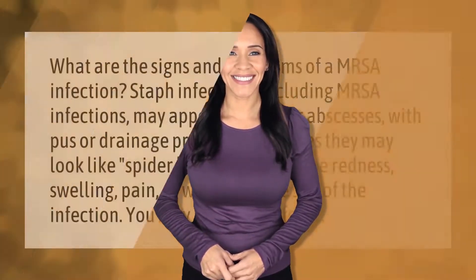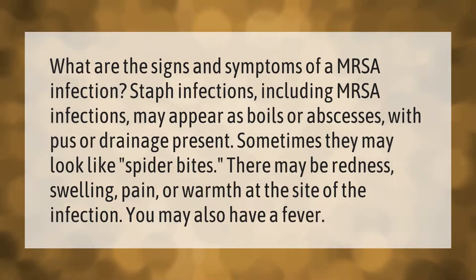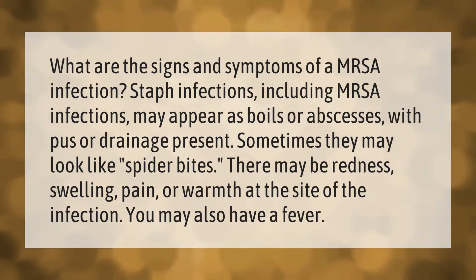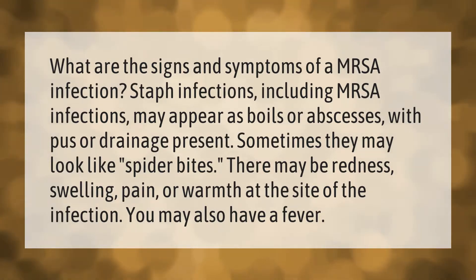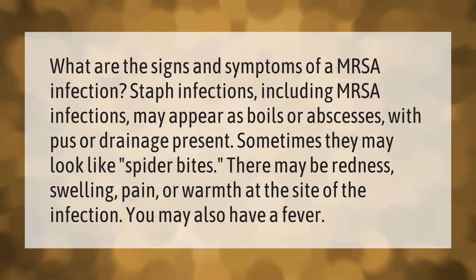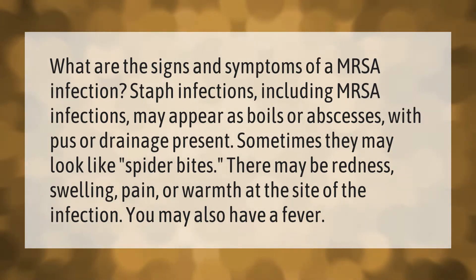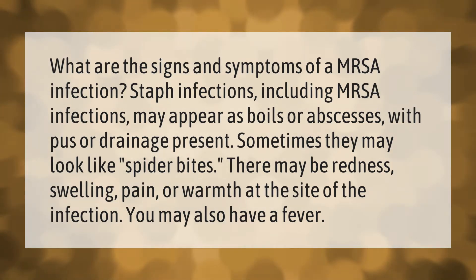What are the signs and symptoms of a MRSA infection? Staph infections, including MRSA infections, may appear as boils or abscesses with pus or drainage present. Sometimes they may look like spider bites. There may be redness, swelling, pain, or warmth at the site of the infection. You may also have a fever.